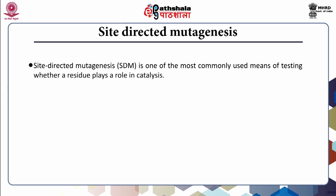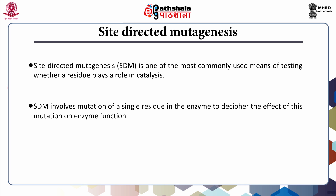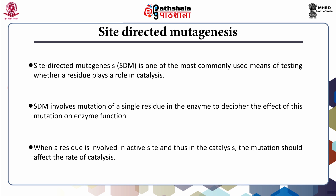Site-directed mutagenesis is one of the most commonly used means of testing whether a residue plays a role in catalysis or not. It involves mutation of a single residue in the enzyme to decipher the effect of this mutation on enzyme function. When a residue is involved in the active site in catalysis, the mutation should affect the rate of catalysis.